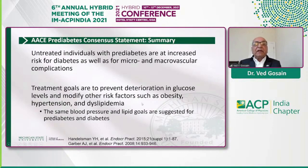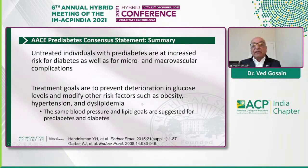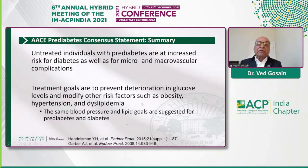Untreated individuals with prediabetes are at increased risk for diabetes as well as micro- and macrovascular complications. Treatment goals are to prevent deterioration in glucose levels and modify other risk factors such as obesity, hypertension, and dyslipidemia. The goals for management of blood pressure and lipids are the same as for diabetes, so even patients with prediabetes should have attention paid to blood pressure and lipid goals.